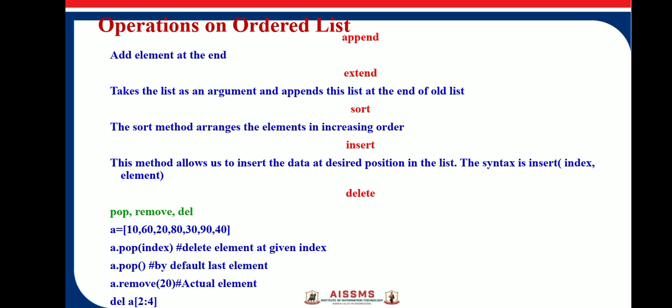The next function is sort. The sort method arranges the elements in increasing order. One condition is that the list must consist of a similar type of data — either all integers or all characters. If the list is a combination of integers and strings, we cannot apply the sort operation on such a list.